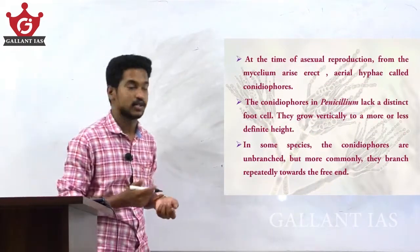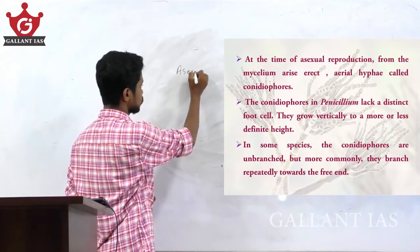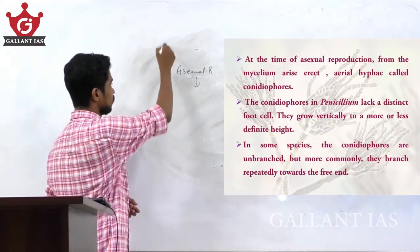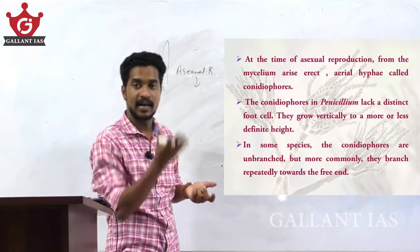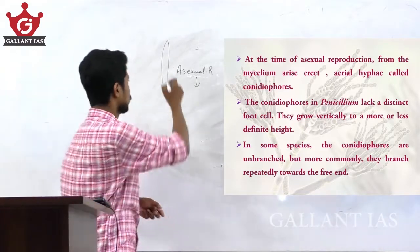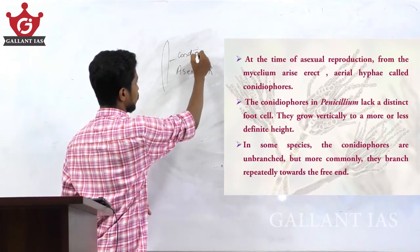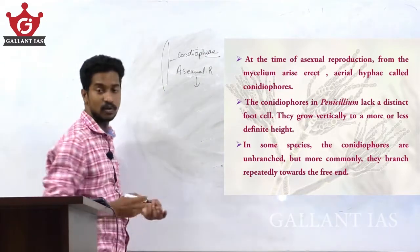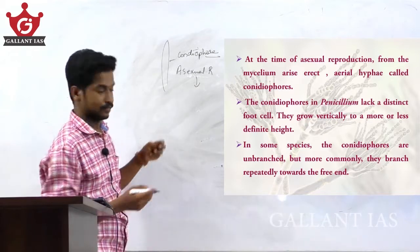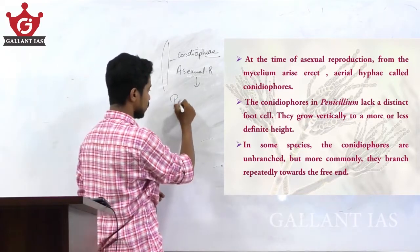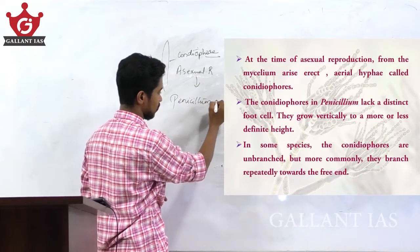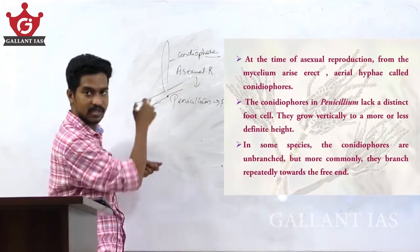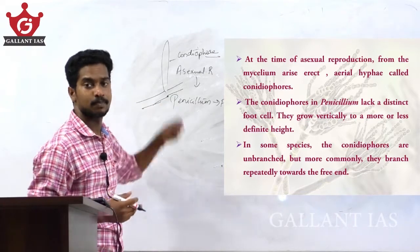At the time of asexual reproduction, mycelia arise as erect aerial hyphae called conidiophores. The conidiophores in Penicillium lack a distinct foot cell. The foot cell, which was discussed in the previous class, is absent in Penicillium.